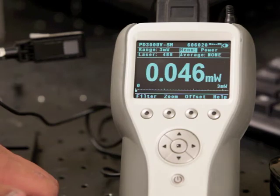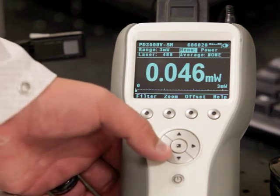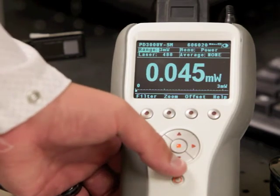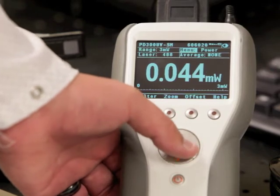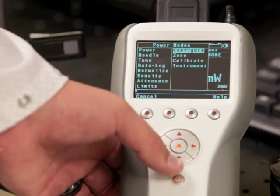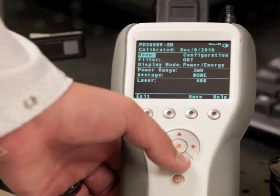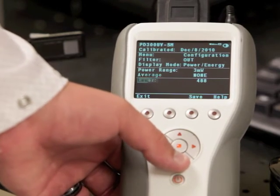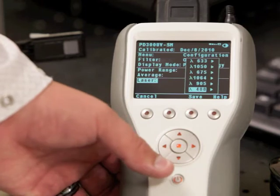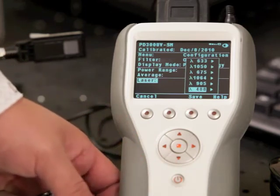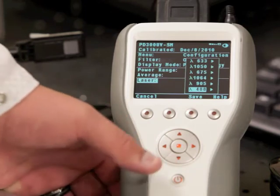If I want to change the default wavelength that my sensor starts up with, using the arrow keys, I select the menu function. From here, I select configure and I arrow down to the laser function. From here, you can see it displays my six favorite wavelengths.